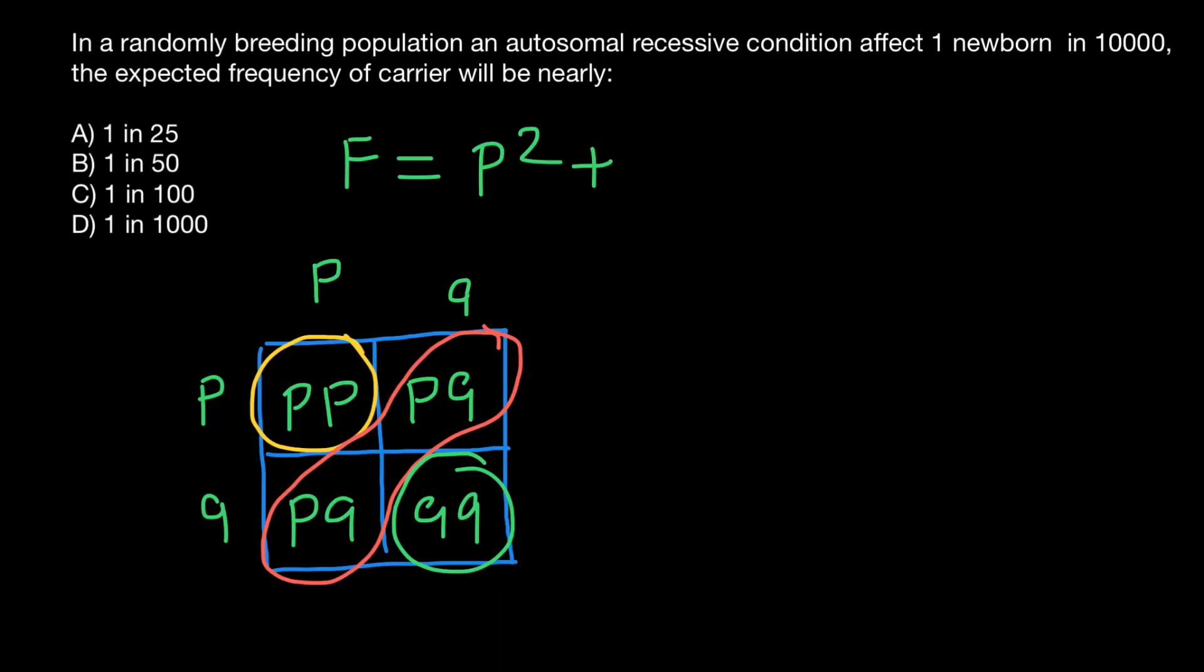So hence 2PQ. And the homozygous recessive genotype, which is Q, Q, or we can say Q squared.